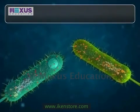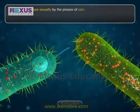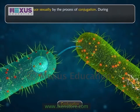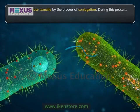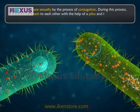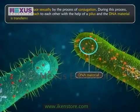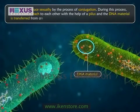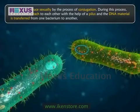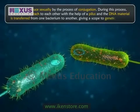Bacteria also reproduce sexually by the process of conjugation. During this process, two bacteria attach to each other with the help of a pilus, and DNA material is transferred from one bacterium to another, giving scope for genetic diversity.